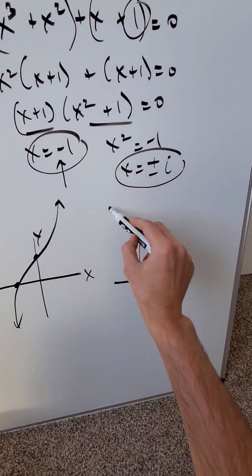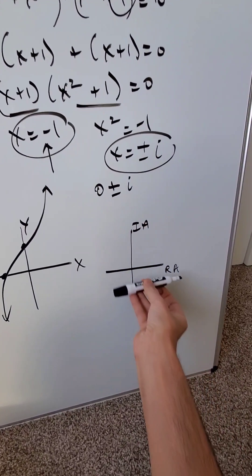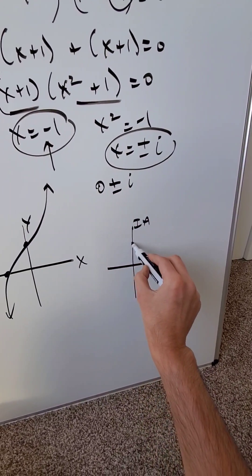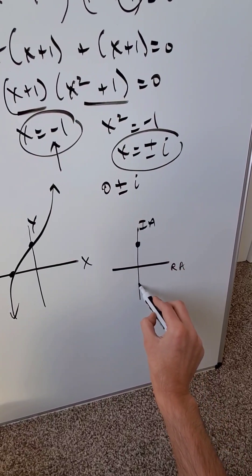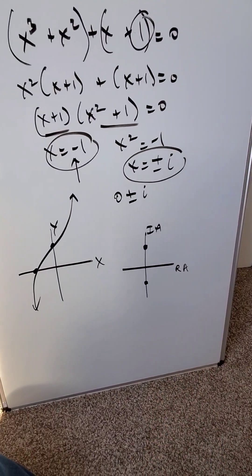But these solutions right here, imaginary solutions plus and minus i, on a real axis and an imaginary axis, a complex plane, here's your one imaginary solution, here's your other, and you're done.